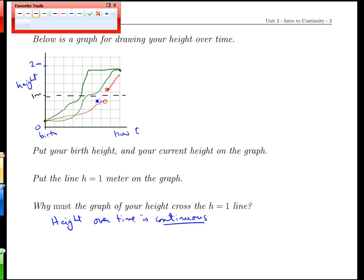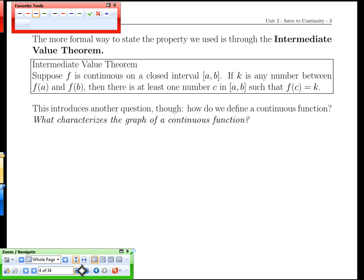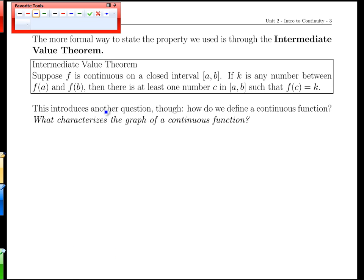All right, so I hope I've convinced you that at some point in your career, some point in your life, you were exactly one meter tall. Let's see if we can generalize that a bit. There's a statement theorem called the Intermediate Value Theorem and it encapsulates exactly what we used in our analysis in that last example.